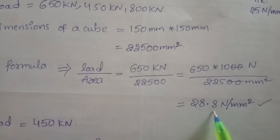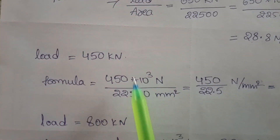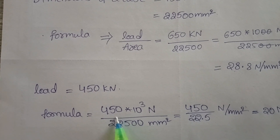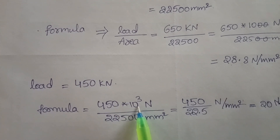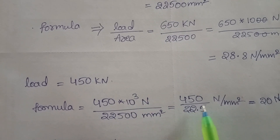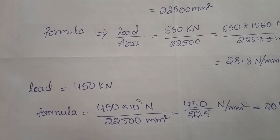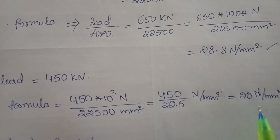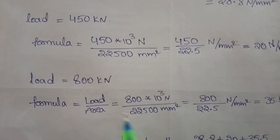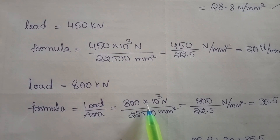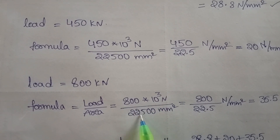So 650 kN converted into N: 650 x 1000 N divided by 22,500 mm squared. Cancellation gives 6,500 divided by 225, which equals 28.8 N per mm squared. Second cube load: 450 kN. Formula: 450 x 10 cubed N divided by 22,500 mm squared, giving 450 divided by 22.5, which equals 20 N per mm squared. Third cube load: 800 kN. Formula: load divided by area, 800 kN converted into N divided by 22,500.